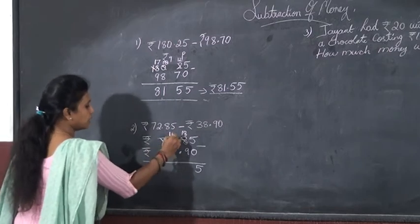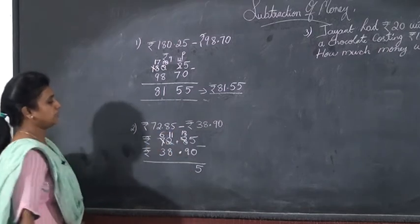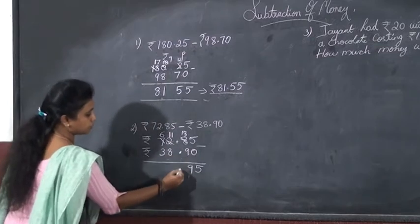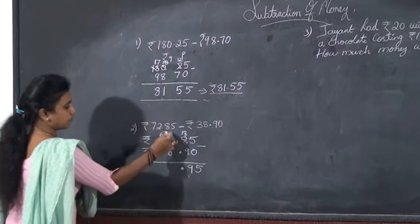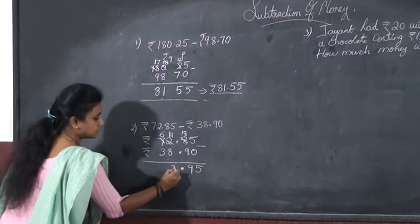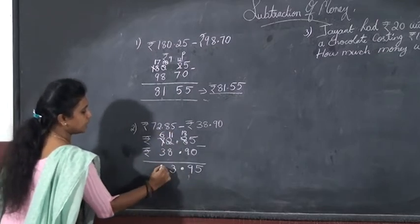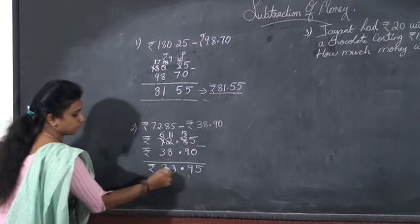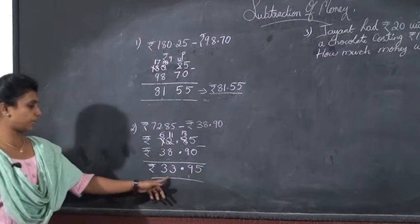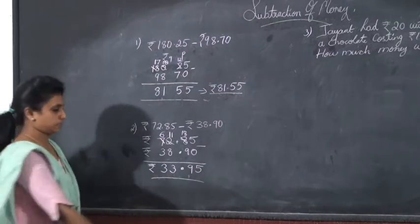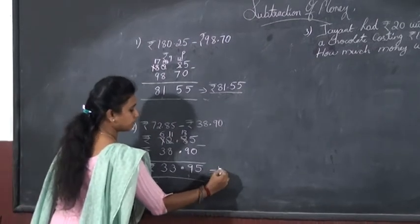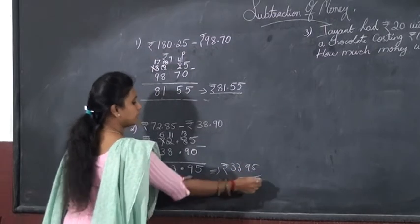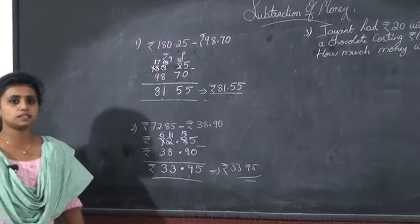What is 18 minus 9? 9, so write the answer and put the dot. Then 11 minus 8, that is 3. 6 minus 3, it is 3. That is, then you want to put the rupee symbol, 33 rupees 95 paisa. Okay, that is 33 rupees 95 paisa. Clear children? So this is the way of subtracting the amounts or the money.